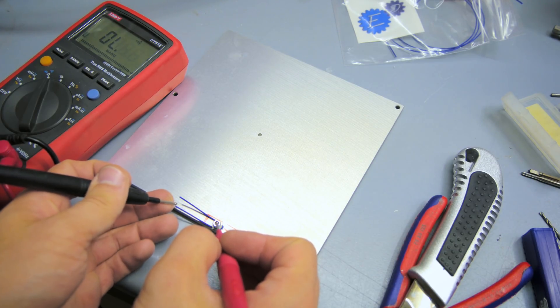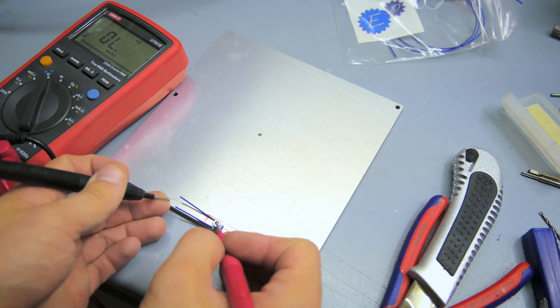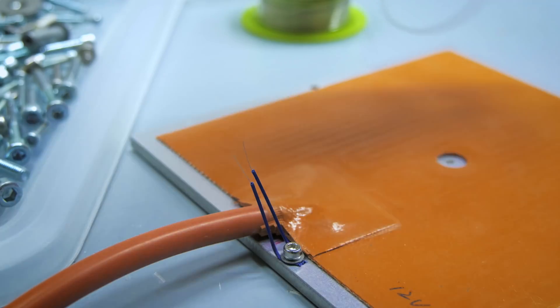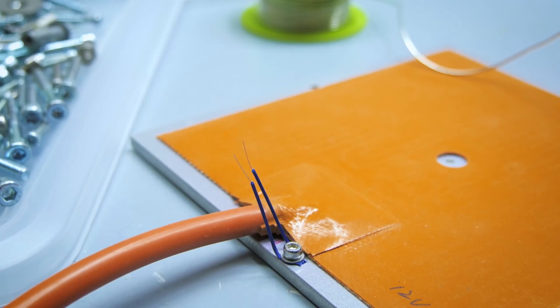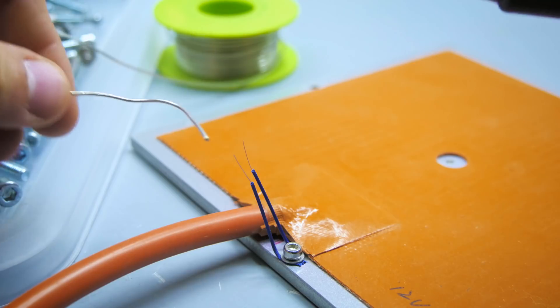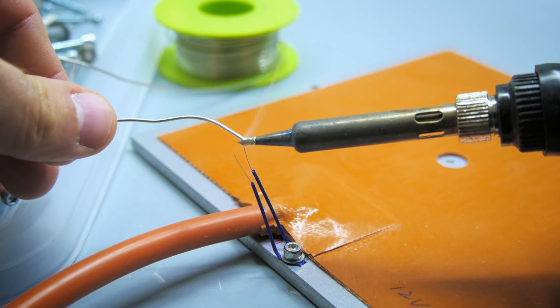Finally, check for shorts from the thermistor's legs to the aluminum plate. If only one side is shorted to the bed, it's not going to cause any issues immediately, but might give you a headache in the long run. So in that case, I'd recommend refitting the thermistor just to make sure.